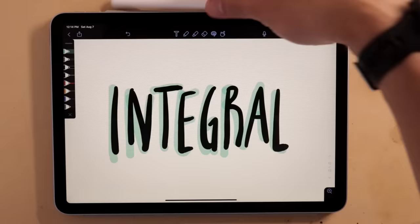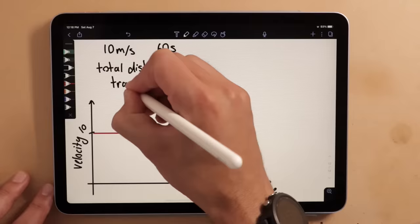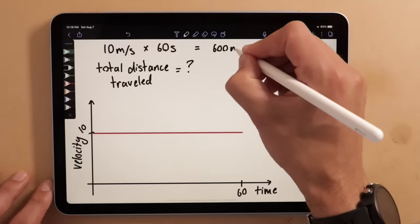Let's explain this using a common example. Say we were in a car traveling at 10 meters per second for 60 seconds. Here's a graph of the velocity over time. The question is how far do we travel in total? Well, in this case it's a simple calculation. The total distance traveled is just rate times time. 10 times 60 equals 600 meters.